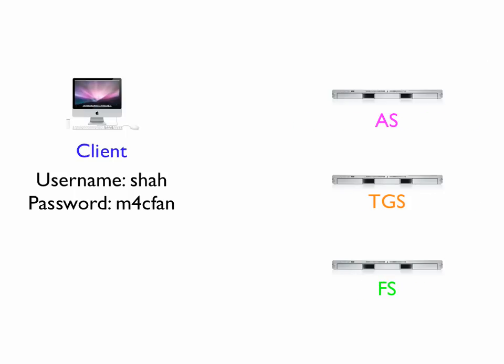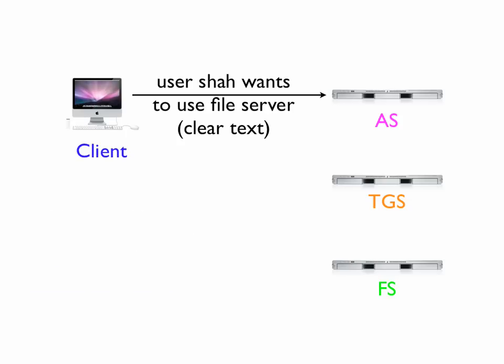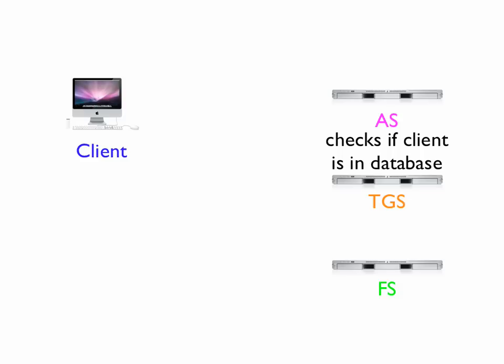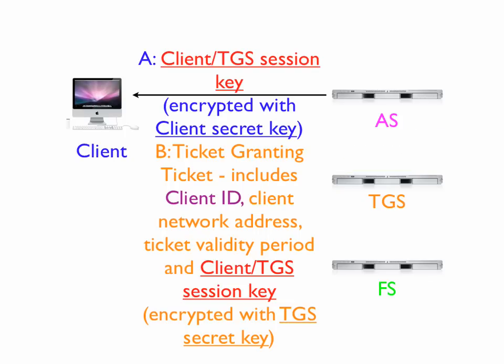For this particular client, somebody has logged on using the name Shah and the password M4CFAN. The client will then be able to generate a client secret key from this username-password combination. When the client wants to use the file server, it sends a simple clear text message to the authentication server saying user Shah wants to use the file server. The authentication server checks to see if user Shah is in its database, and if so, it can generate a client secret key based on Shah's username and password.